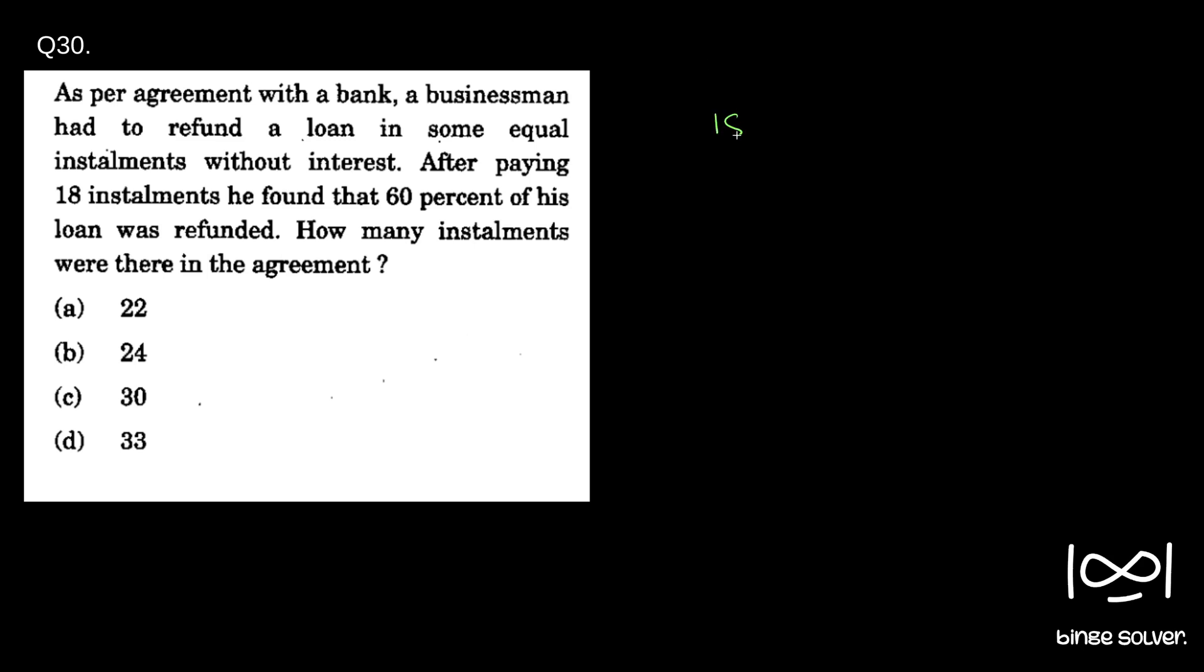It is given 18 installments is 60 percentage of his original amount, say x amount. So that original amount will equal to how much installments? 18 by 0.6, or we can say 18 times 10 divided by 6, which equals 3 times 10, which gives us 30 installments.